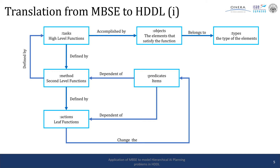The parallelism between HDDL and model-based system engineering is relatively straightforward. In system engineering, the behavior of the system is defined through functions derived from requirements. Functions may have different hierarchies, going from high-level functions down to leaf functions. Tasks — what we expect the system to do — correspond to high-level functions. Methods — how we execute a task — can be seen as second-level functions. The second-level functions are decomposed into leaf functions that change the state of the system, so they can be seen as actions in HDDL. Predicates can be seen as items that can change the flow and advance the plan — going from one function to the other in the MBSE analysis.